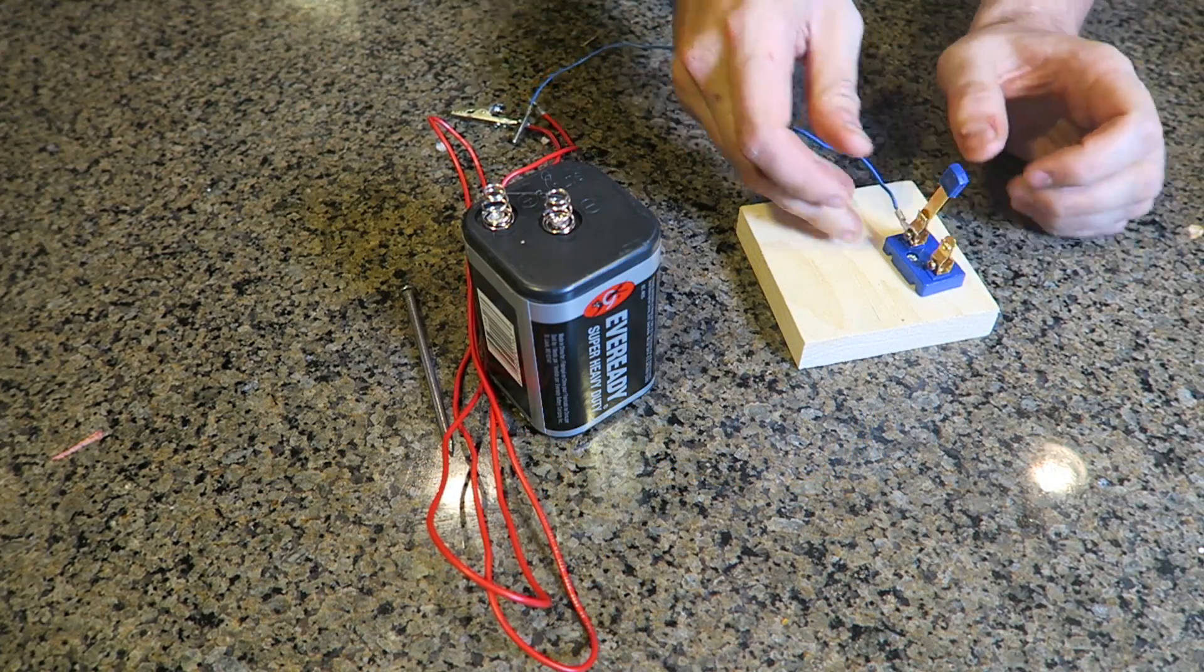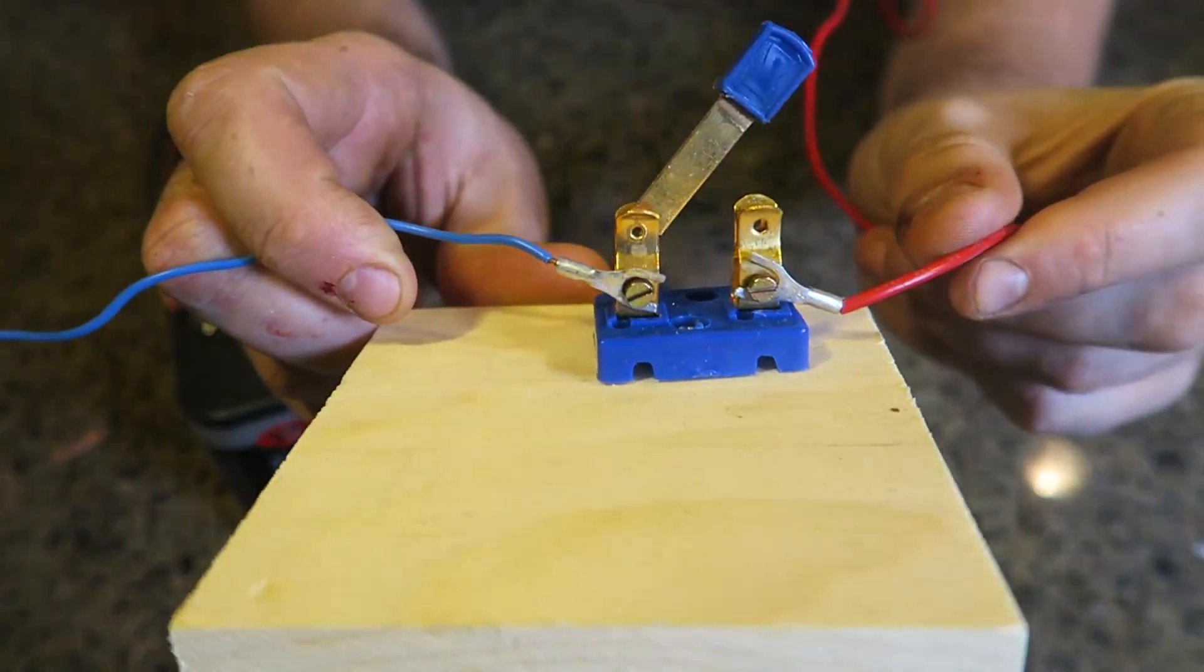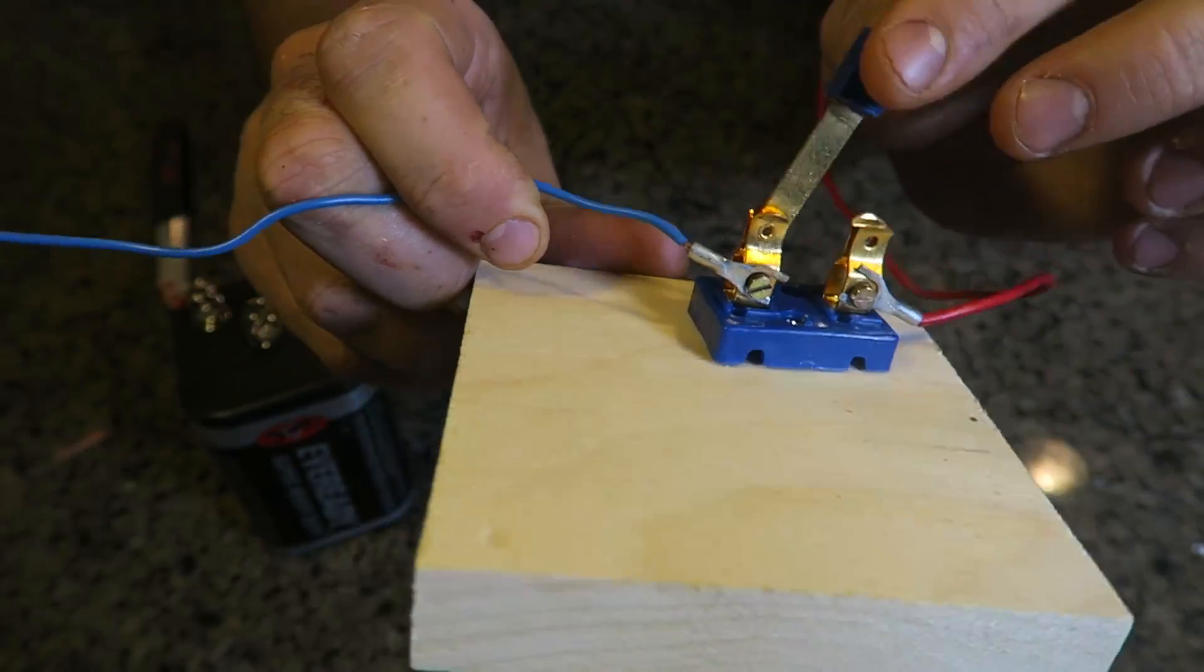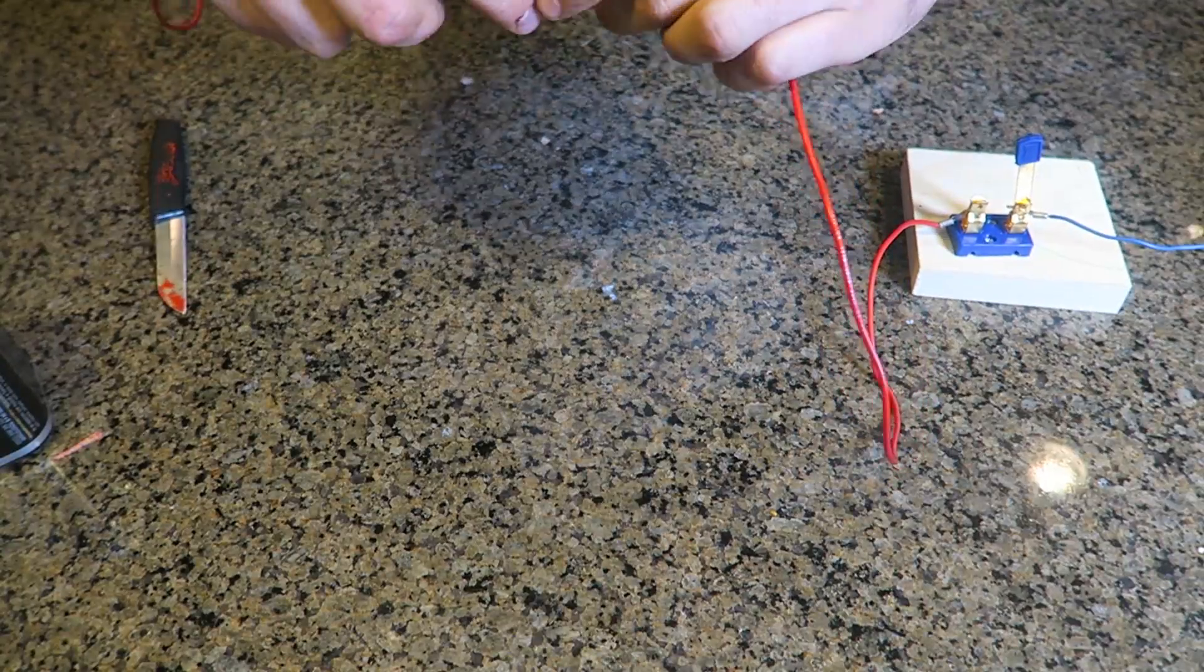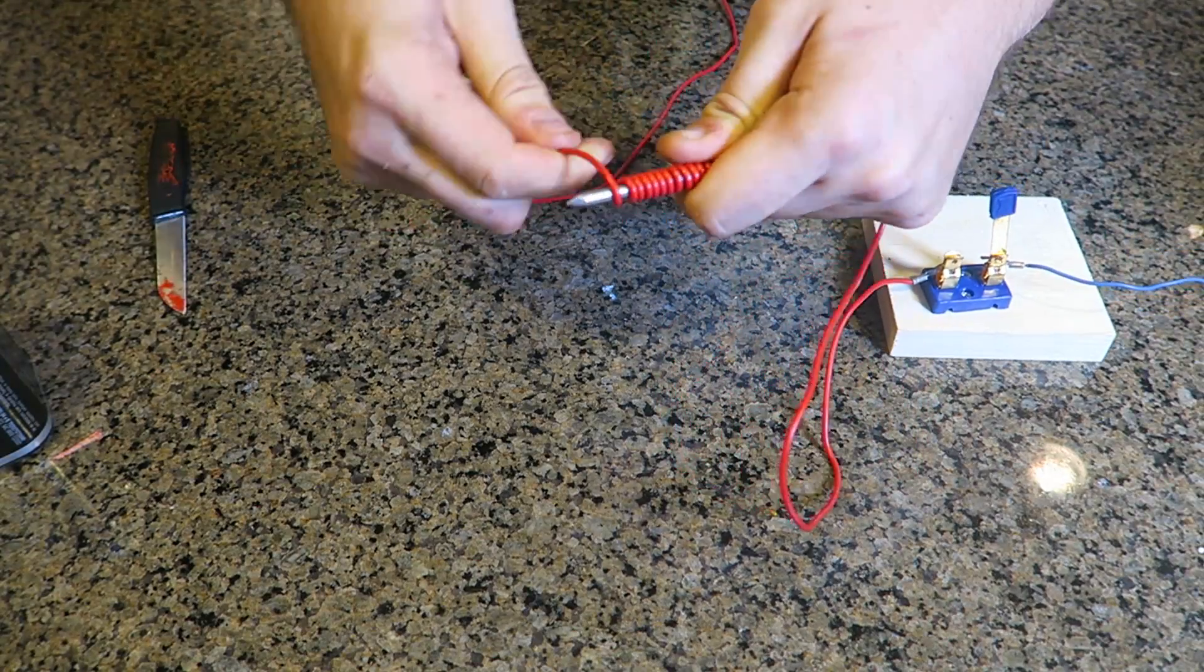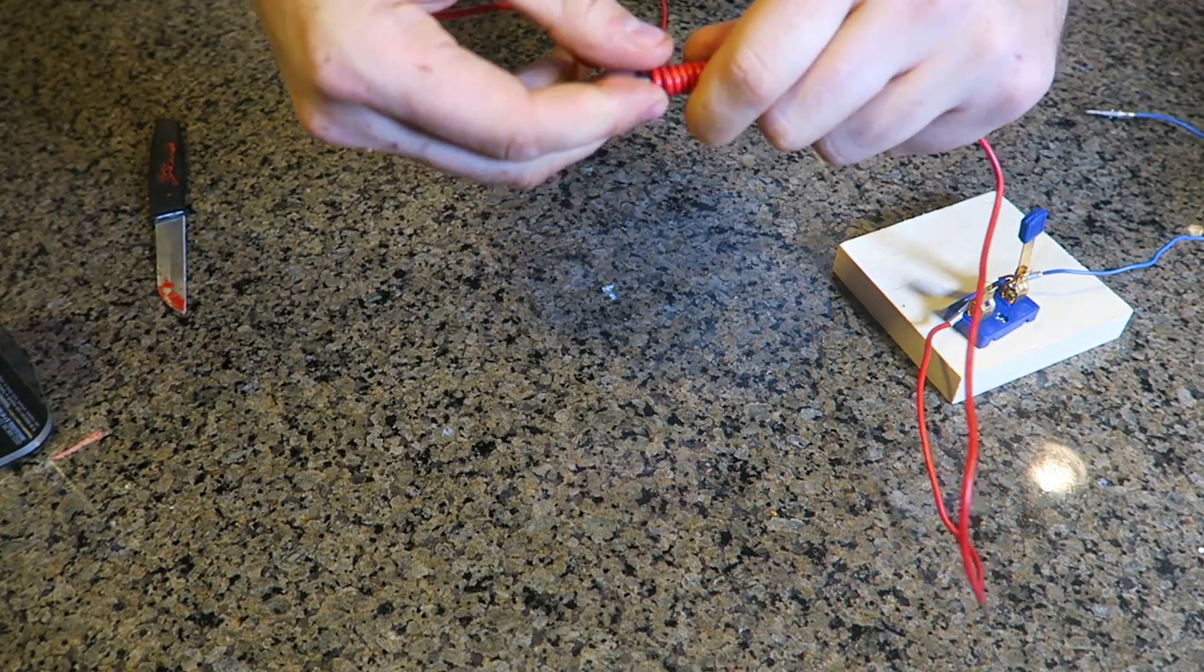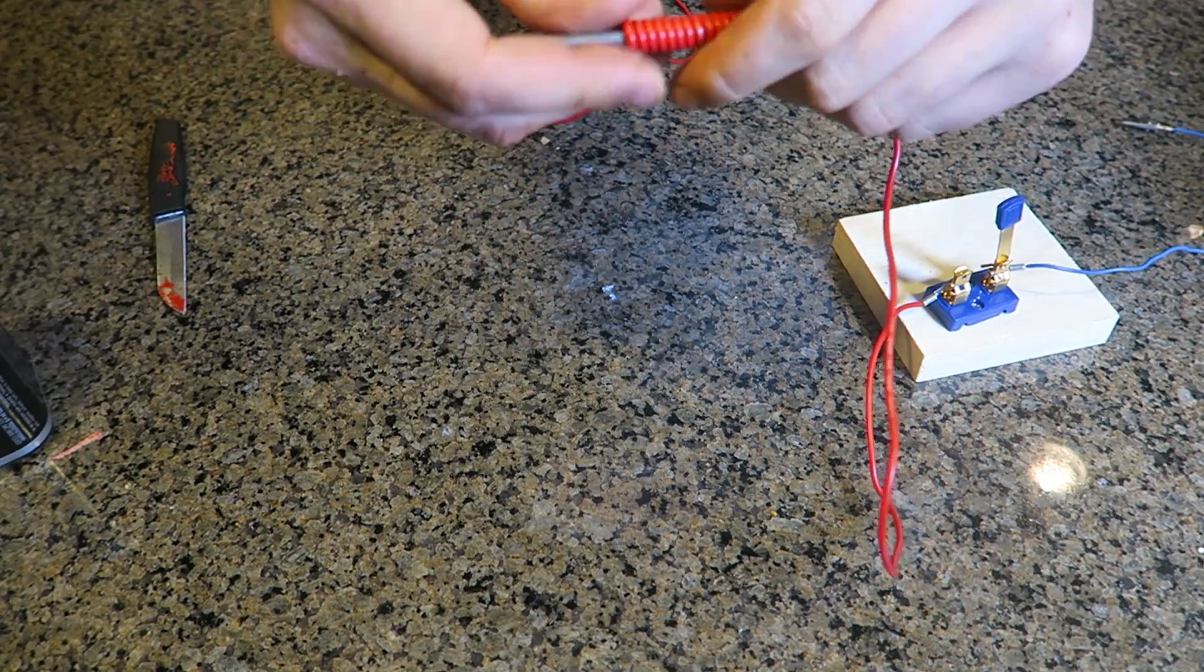So first we're gonna hook up the wires. So as you can see, I hooked up these two wires to this circuit thing. And then I'm gonna grab a longer wire and wrap it around the nail. Just like this. I need to make it as tight as possible.